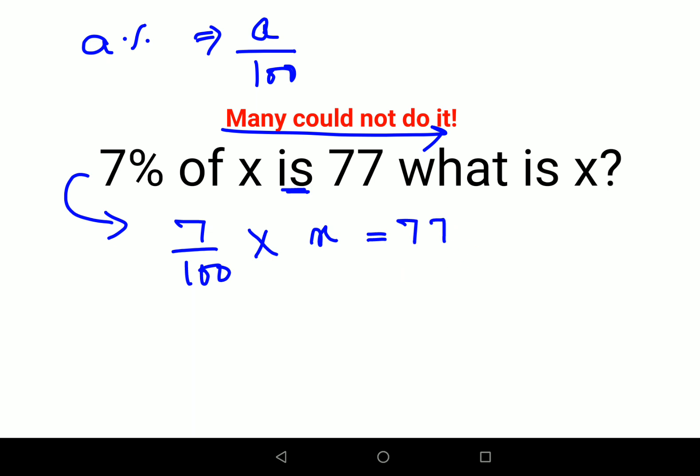it is. Now in order to find the value of x, you will multiply both sides by 100 and divide both sides by 7. Why? Like that, so this and this is canceling, this and this is